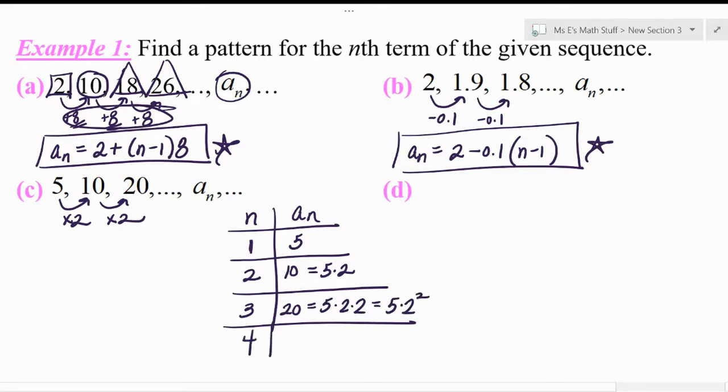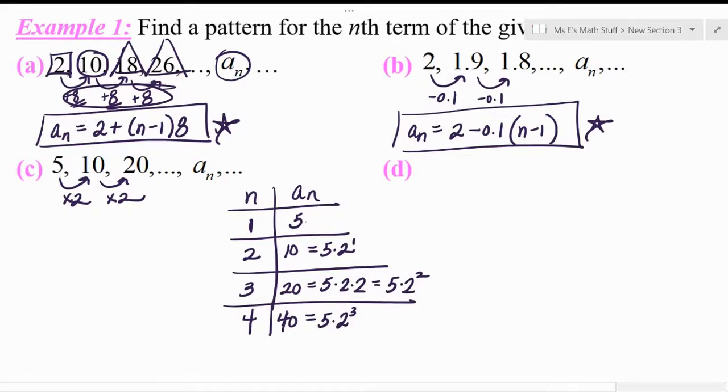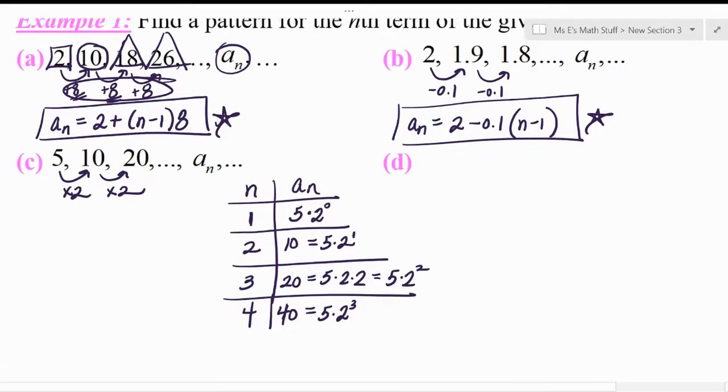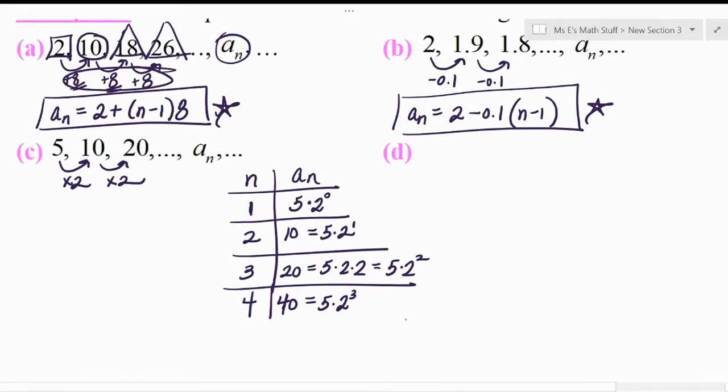All right. To get to the fourth term, which would have been 40 had it been written, that would be 5 times 2 times 2 times 2, which is 2 cubed. So I'm going to go back and put some extra stuff that really kind of shows that the pattern that we figured out actually works.